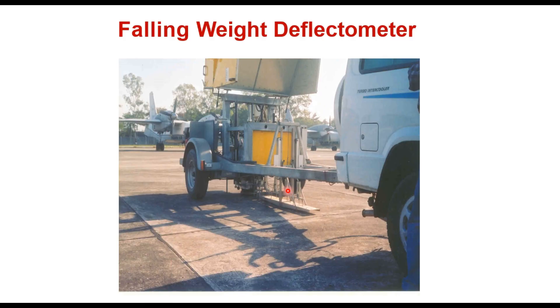This falling weight deflectometer is a device that is used to apply a transient load on the pavement and measure deflection in the pavement at different points away from the load. Deflections are measured through geophones.